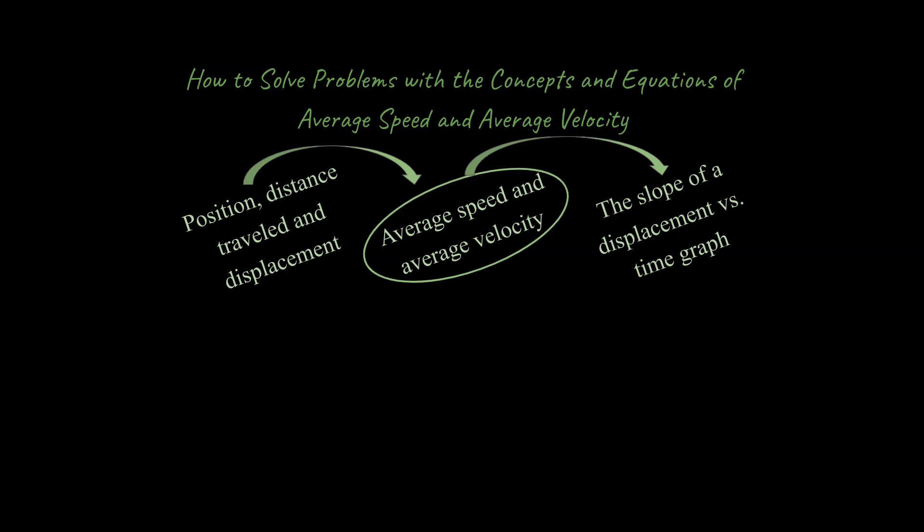This is a really central and important foundational set of ideas in Introduction to Motion for our physics classes. Where have we been? We've talked about position, distance traveled, and displacements. I've got a previous lesson I did on that. I'll put a link in the upper right where you can get that if you have not already. Today we're going to be talking about average speed and average velocity, and building on that, we're going to talk about the slope of a displacement versus time graph, so think about velocity in a different way.